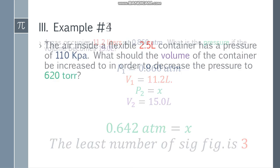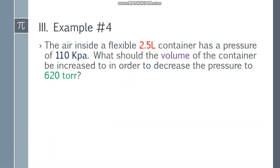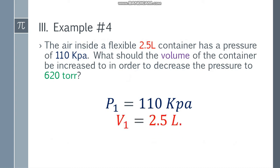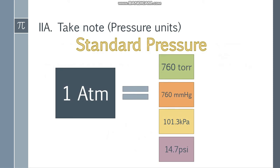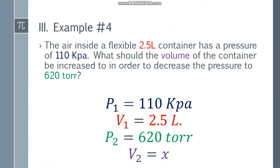Example number 4. The air inside a flexible 2.5 liter container has a pressure of 110 kPa. What should the volume of the container be increased to in order to decrease the pressure to 620 torr? We have initial pressure 110 kPa, initial volume 2.5 liters, resulting pressure 620 torr, and resulting volume is x. Take note: the pressure units are different — kPa and torr — so someone needs to adjust.